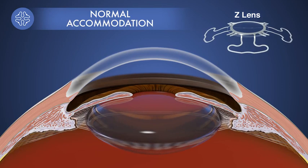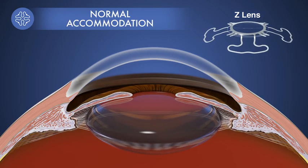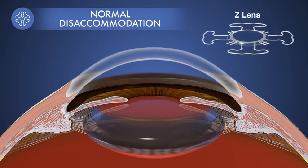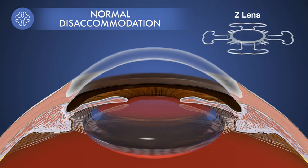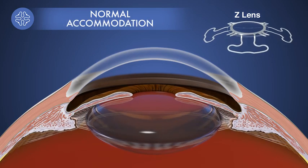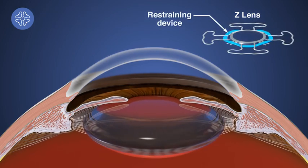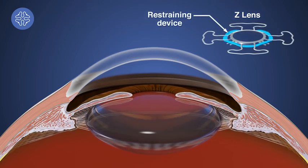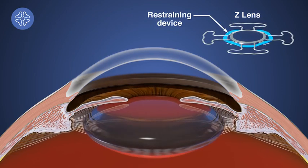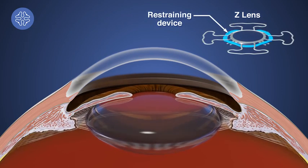In this way, the Z-Lens moves back and forth in much the same way that the natural lens does during accommodation and disaccommodation. Before use, the Z-Lens is temporarily restrained in a flat configuration.